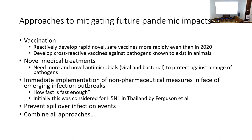The immediate implementation of non-pharmaceutical measures in the face of emerging infection outbreaks raises the key question: how fast is fast enough? Since Neil Ferguson published one of the earliest studies looking at H5N1 avian influenza emergence using data from Thailand around 2005, I think we can learn quite a lot from global responses and their governance. Given our globally connected world, if we have a pathogen with an R value just slightly above one, the speed with which we can intervene globally is just too slow.